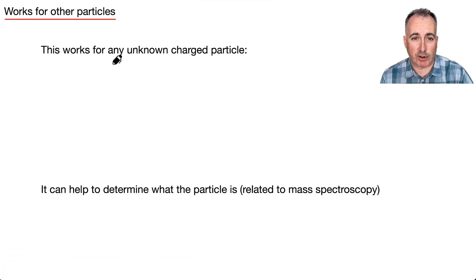This works for other particles too. Before we had just e, and now we can do it for anything in general. We can say Q, the charge of any particle, over mass is 2 times V over B squared R squared. This is useful for just about anything.